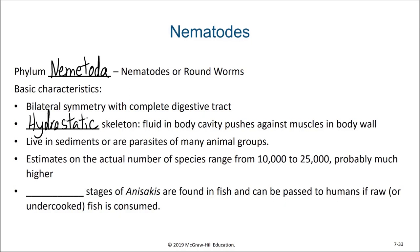Estimates on the actual number of species in this phylum range from 10,000 to 25,000, but it's likely significantly higher. They are an important component of sediment communities worldwide. One particular nematode of interest is from the genus Anisakis. Its larvae can be found within fish, and if fish is consumed raw, these parasitic larvae can be introduced to humans or other organisms, causing a variety of illnesses and symptoms.